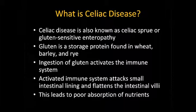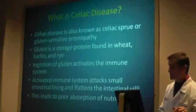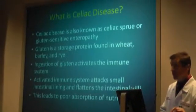When an individual with celiac disease ingests gluten, they'll actually activate their own immune system. That immune system will then go around and attack the small bowel or small intestinal lining, flattening the villi — the little finger-like growths of the small intestine that help us absorb materials — leading to poor absorption of nutrients.